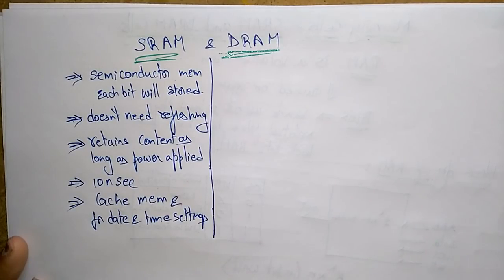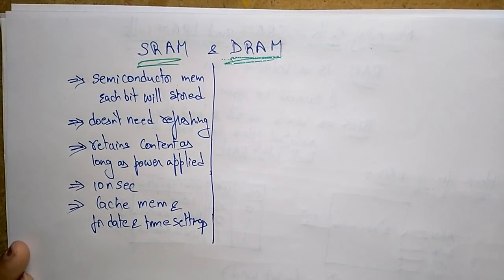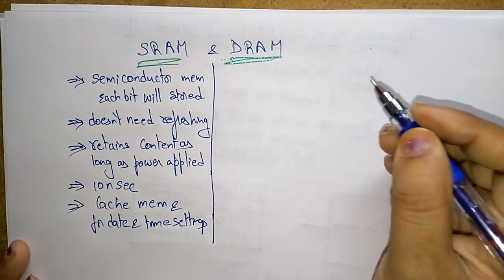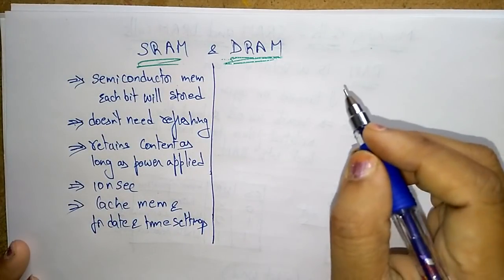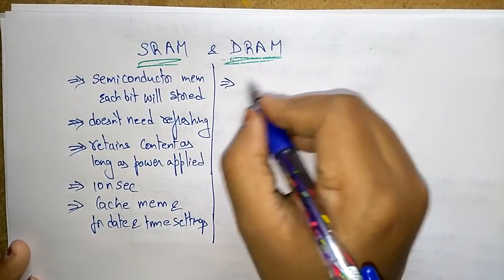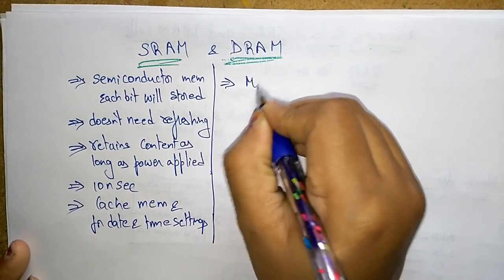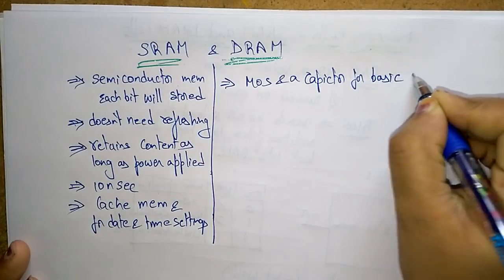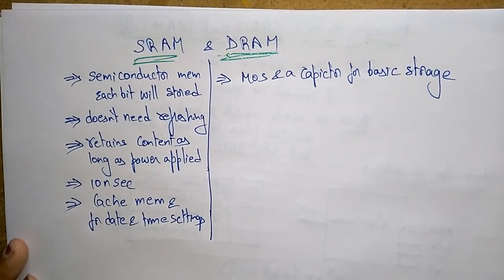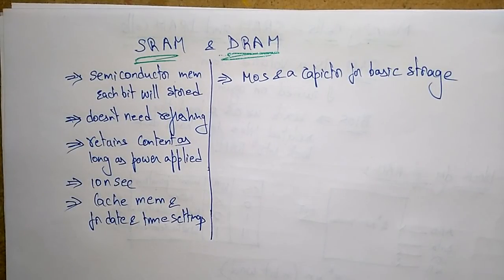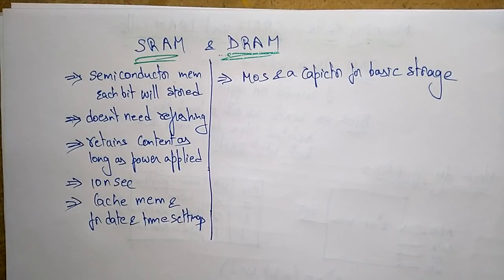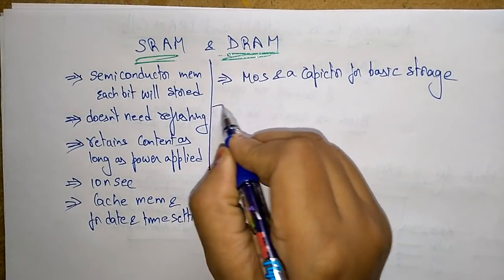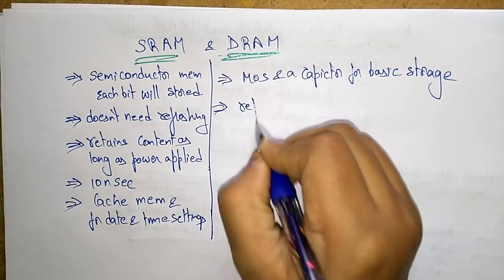DRAM is Dynamic RAM. Its basic storage device is not a flip-flop but a MOS transistor and a capacitor. The charge on the capacitor determines the stored bit — 0 or 1. However, the stored charge does not remain indefinitely due to leakage current, so a periodic refresh cycle is required to maintain stored data.